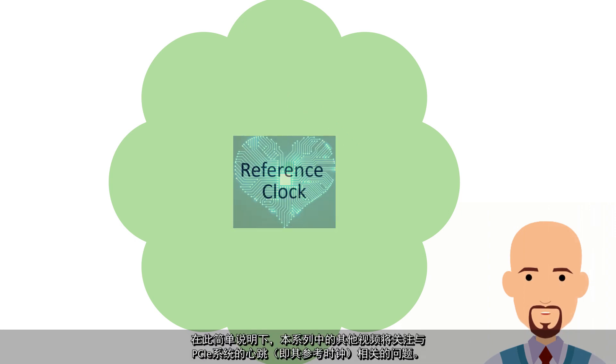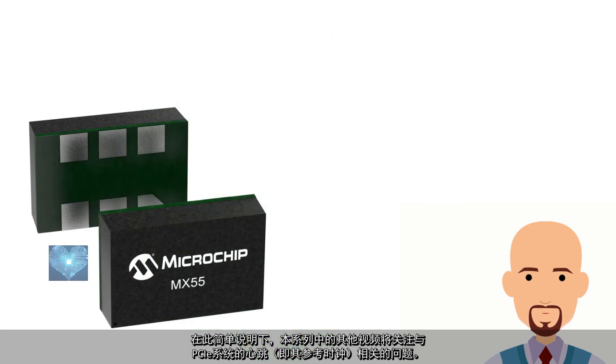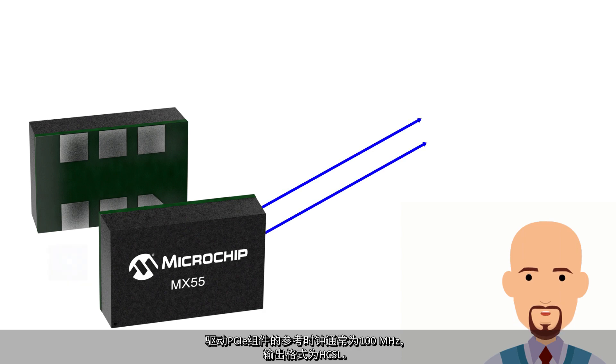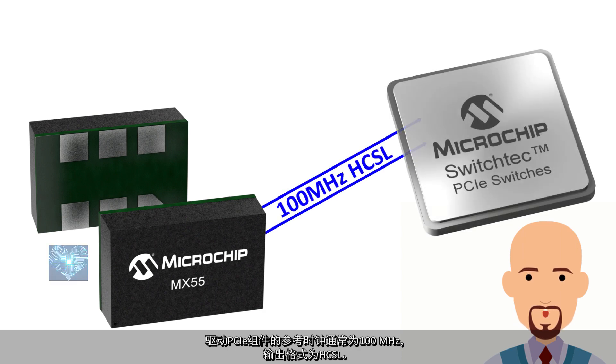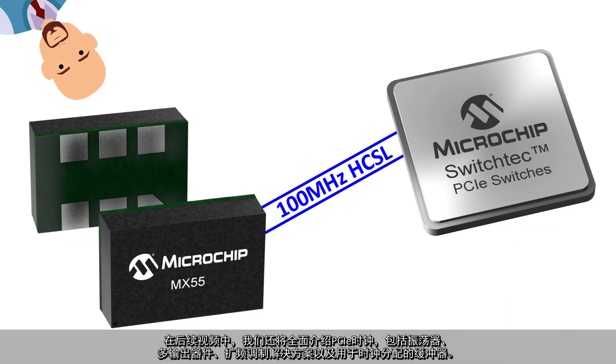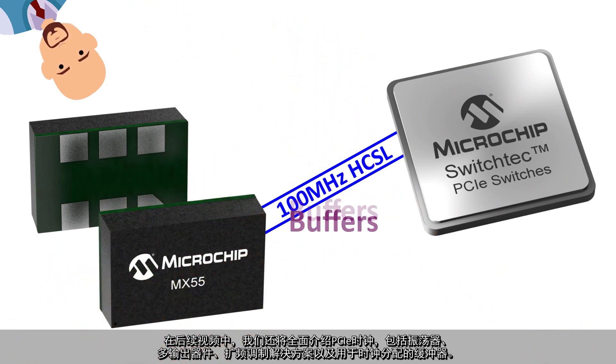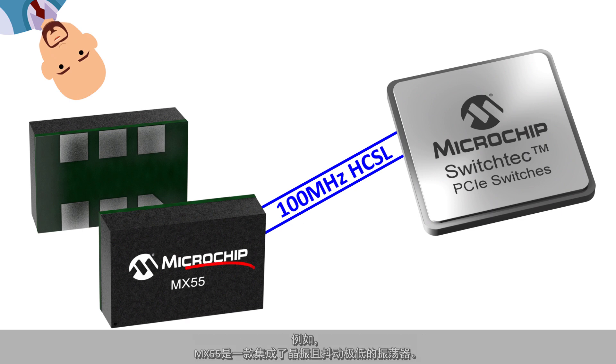One quick note here, the rest of the videos in this series will focus on issues related to the heartbeat of a PCIe system, which is its reference clock. The reference clock that drives PCIe components is usually 100 MHz with HCSL as the output format. In the following videos, we will also cover our complete breadth of PCIe clocks that include oscillators, multi-output devices, spread spectrum solutions, and buffers for clock distribution.